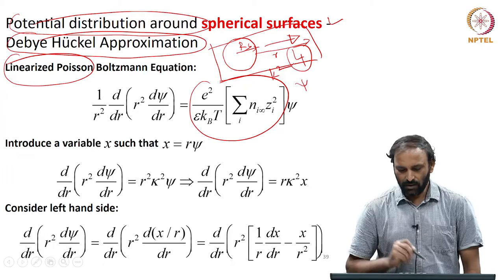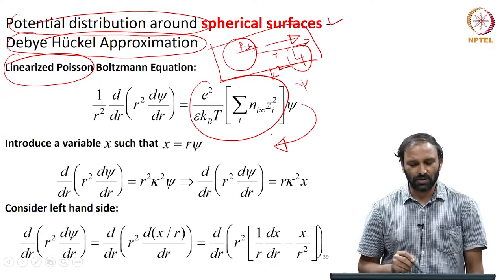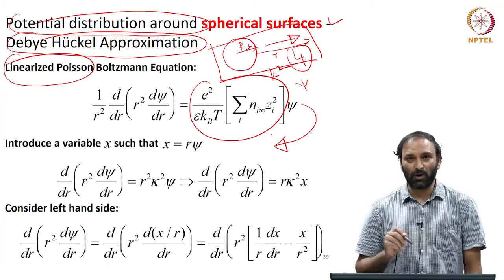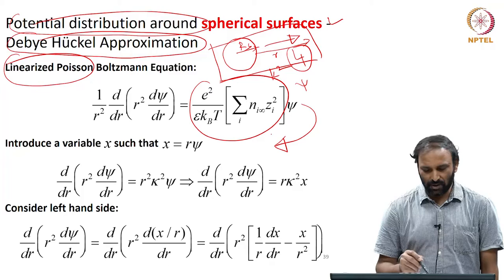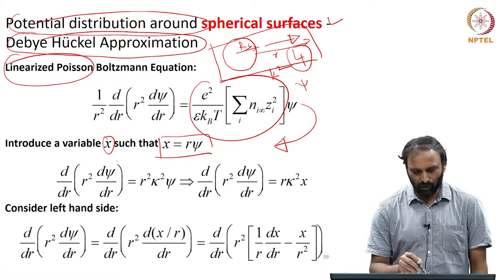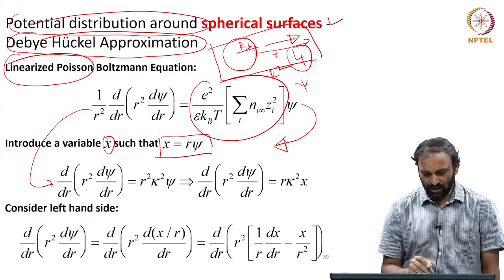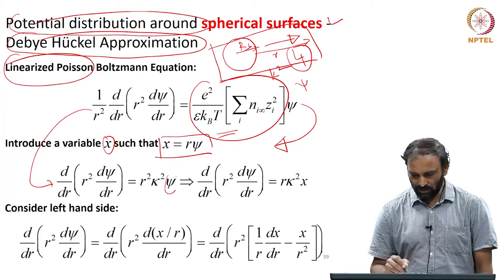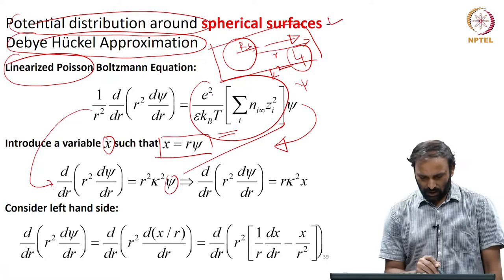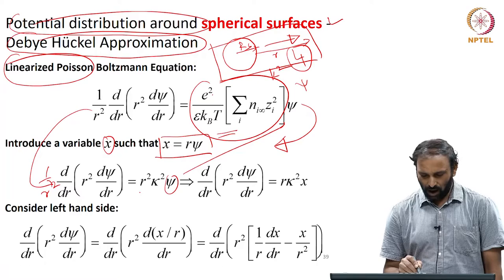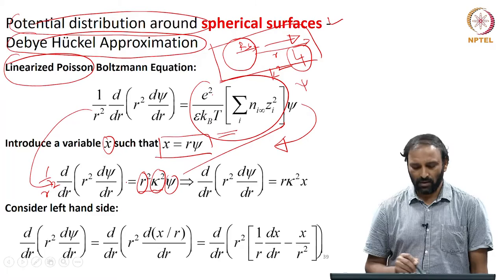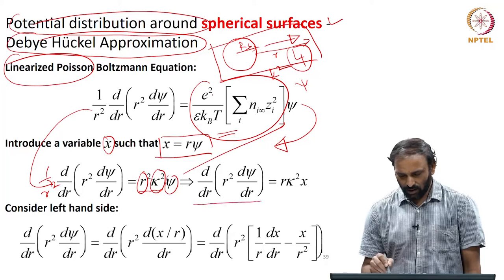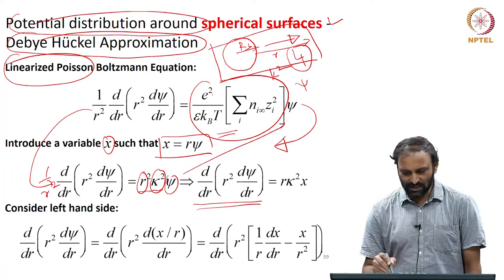The starting point is the linearized Poisson-Boltzmann equation: (1/r²) d/dr(r² dψ/dr) = (e²/εkbT) Σᵢ nᵢ∞ zᵢ² ψ, which equals κ²ψ. To solve this one-dimensional linearized Poisson-Boltzmann equation in spherical coordinates, we introduce a variable x = r·ψ. Rearranging, d/dr(r² dψ/dr) equals r²κ² dψ on the right-hand side.